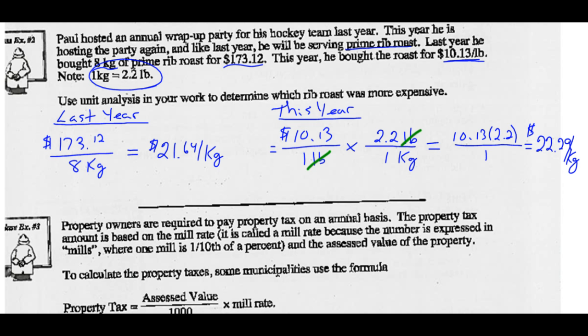I've done my work. And now let's answer the question. Which rib roast was more expensive? Obviously, $22.29 is more expensive than $21.64 per kilogram. So we'd say this year's rib roast costs more. This year, he had to pay more for those rib roasts.